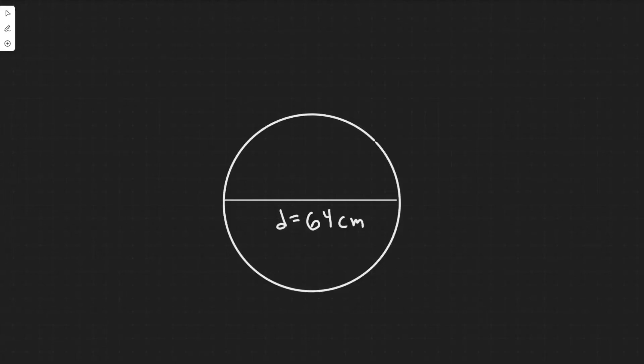In this problem we're told a 64 centimeter diameter wheel accelerates uniformly about its center from 130 rpm to 280 rpm in four seconds. Determine (a) its angular acceleration and (b) the radial and tangential components of the linear acceleration of a point on the edge of the wheel two seconds after it has started accelerating.